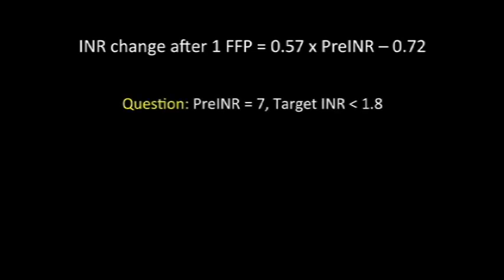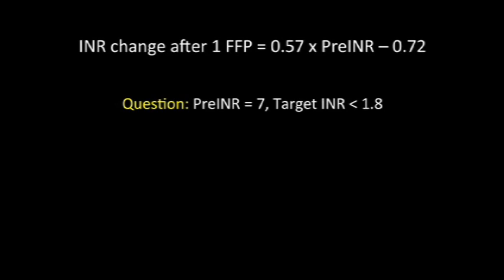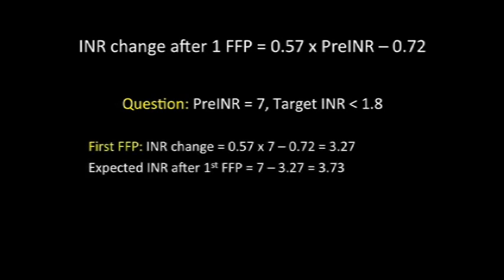We have shown that the simple formula has an overall predictive accuracy of more than 90%. For example, assume that we want to reverse an INR of 7 to less than 1.8 in an average patient. Using our formula, INR change after the first FFP would be 3.27. So, the expected INR after the first FFP is 7 minus 3.27, or 3.73. This is also the INR before the second FFP.